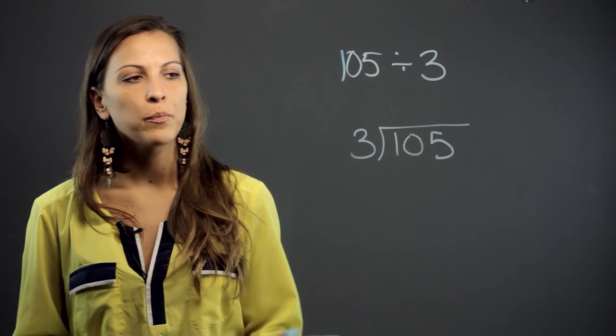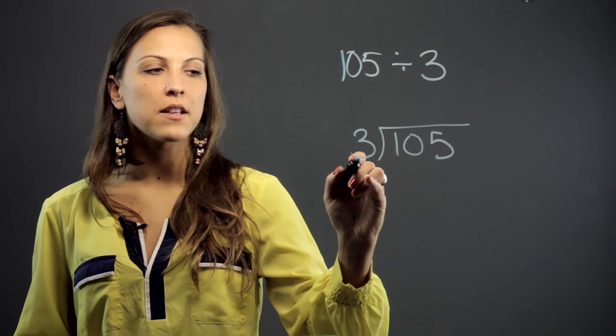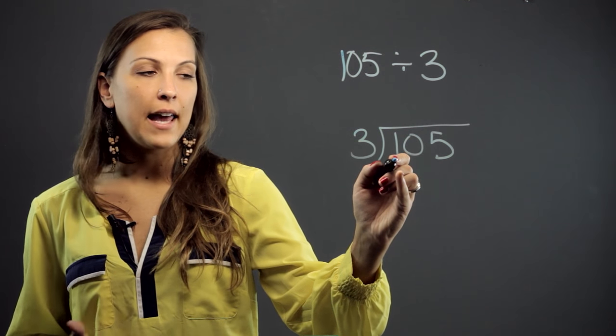So to do long division, we're going to see how many times the number on the outside can go into the number on the inside. So first we're going to ask ourselves, can 3 go into 1? And it can't.